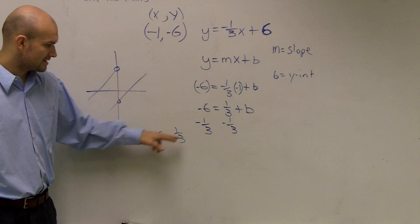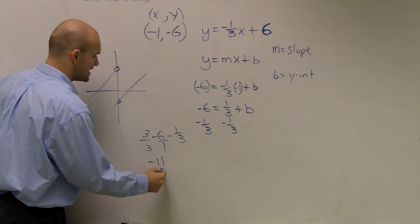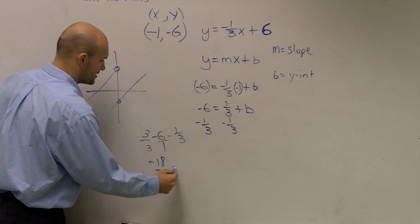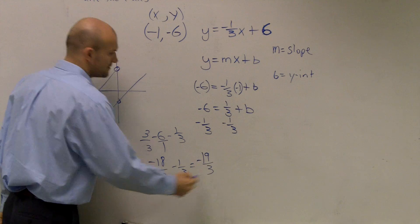So therefore, you have negative 6 minus one-third. Remember, to get this to be a fraction, this is over 1. I have to multiply by 3 over 3. So it would be a negative 18 over 3 minus one-third equals a negative 19-thirds.